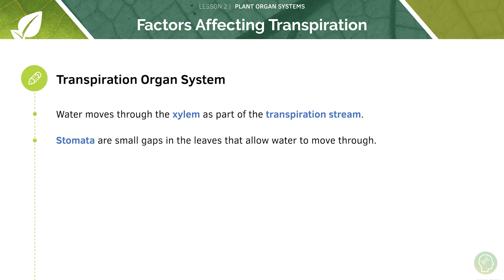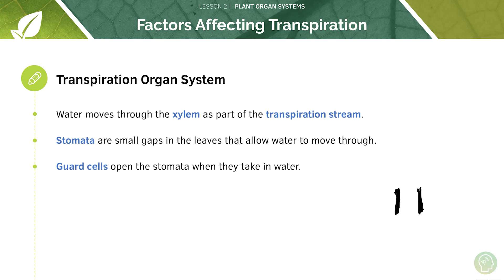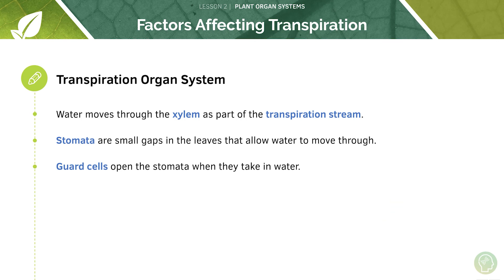Water evaporation from the leaf into the air occurs through stomata — small gaps in the leaves that allow water to move through. Stomata are surrounded by guard cells, which open the stomata when they take in water, therefore allowing gas exchange for photosynthesis.